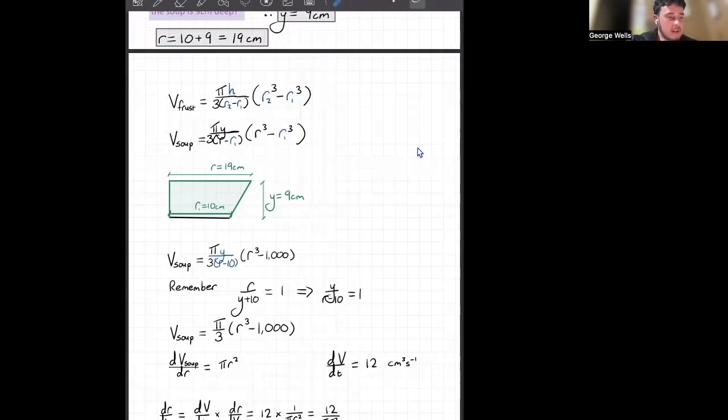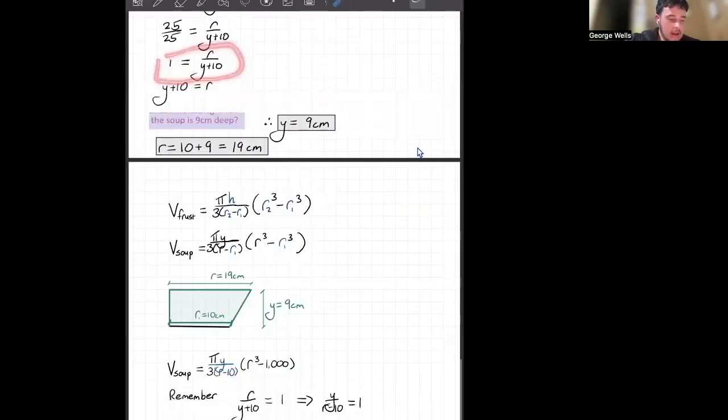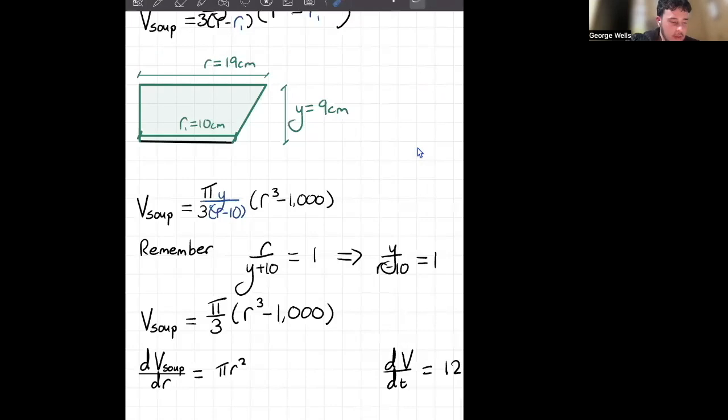which is done from there to there. And remembering that we've just calculated up here that our r divided by y plus 10 is equal to 1, which we can rearrange to give us this.